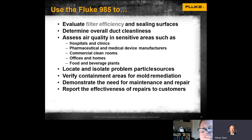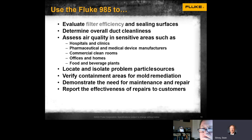The 985 is designed for larger particles. Note that smaller viruses are in the nanometer range, which this unit cannot detect. However, the 985 is crucial for identifying and locating larger problems like bacteria and mold. It helps evaluate filter efficiency, determine overall duct cleanliness, and assess air quality. Applications include hospitals, clinical facilities, pharmaceuticals, clean rooms, offices, homes, and food and beverage plants.